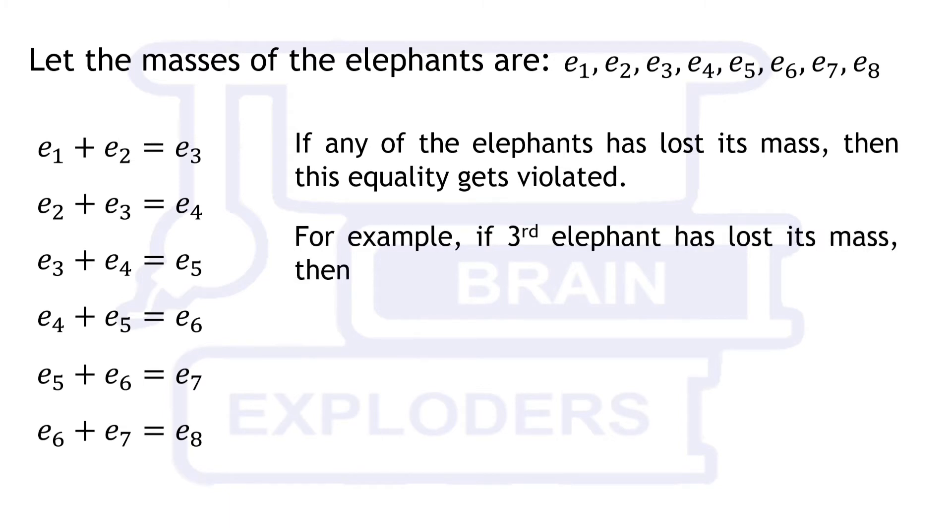For example, if third elephant has lost its mass then the sum of e1 and e2 becomes greater than e3 and the sum of e2 and e3 becomes less than e4, similarly the sum of e3 and e4 becomes less than e5.